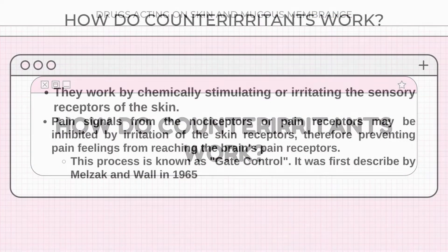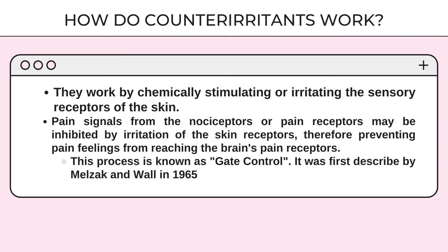How do counter-irritants work? They work by chemically stimulating or irritating the sensory receptors of the skin, especially the sensory receptors associated with thermosensations. Pain signals from the nociceptors or pain receptors may be inhibited by irritation of the skin receptors, therefore preventing pain feelings from reaching the brain's pain receptors. This process is called gate control, as described by Melzak and Wall in 1965.